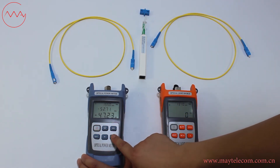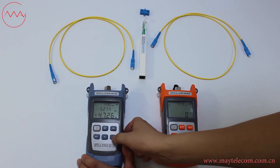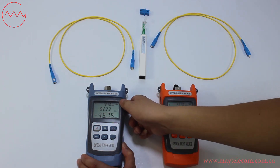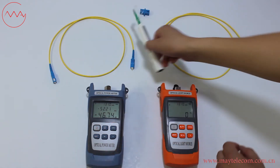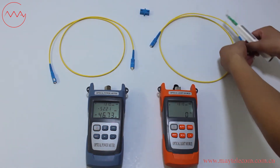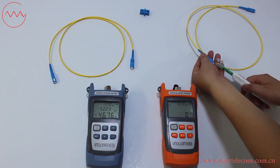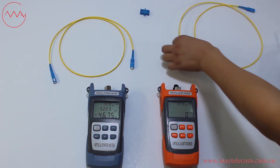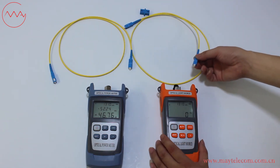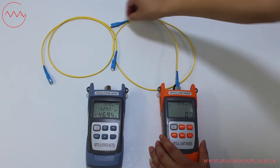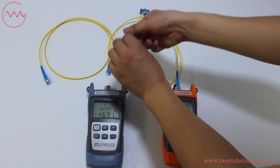For the optical power meter, press the wavelength button to select the same wavelength — 1310 nm. Then clean the reference patch cord.